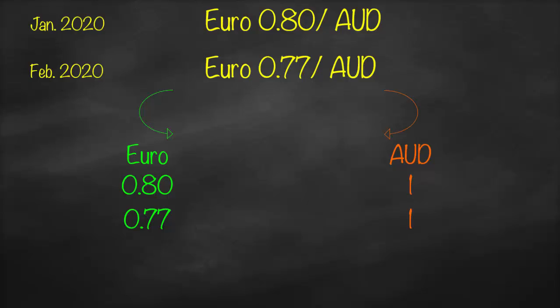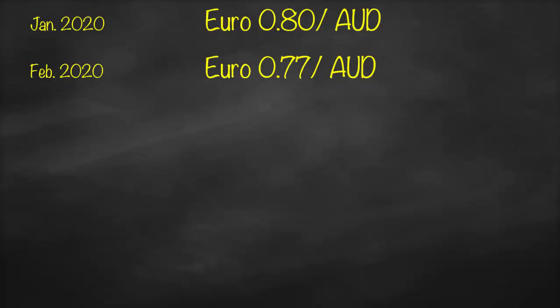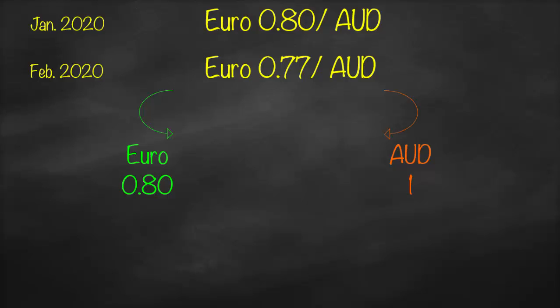Remember, we have two exchange rates. The first exchange rate: we need to pay 0.8 euro to get one Australian dollar. The second exchange rate: we need to pay 0.77 euro to get one Australian dollar. So in order to get the same one Australian dollar, we will pay 0.77 instead of 0.8 — we will pay fewer euros. If we get fewer units of euro, it means that the value of the euro will be higher.